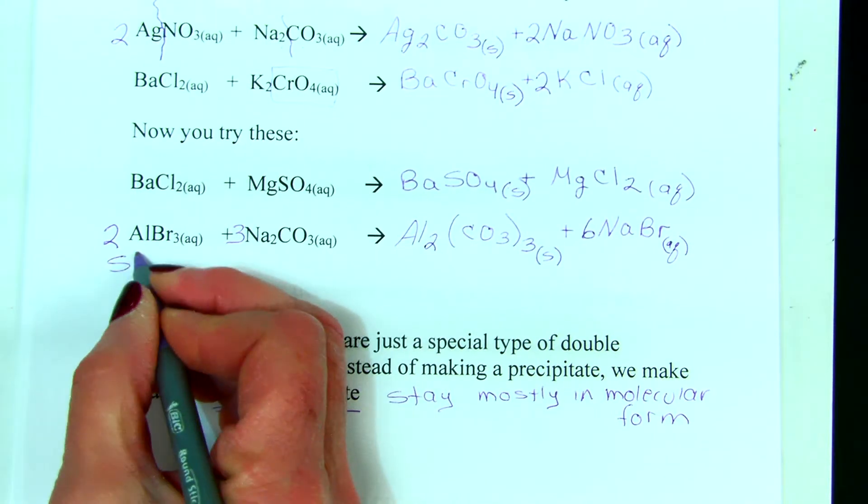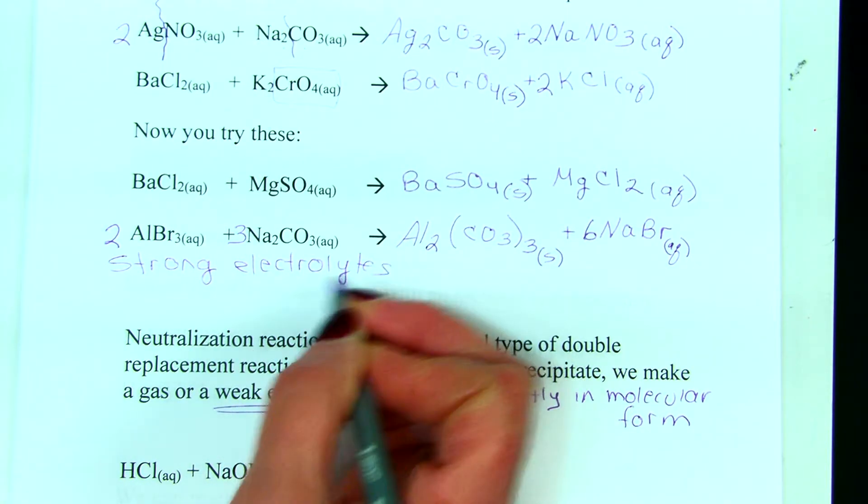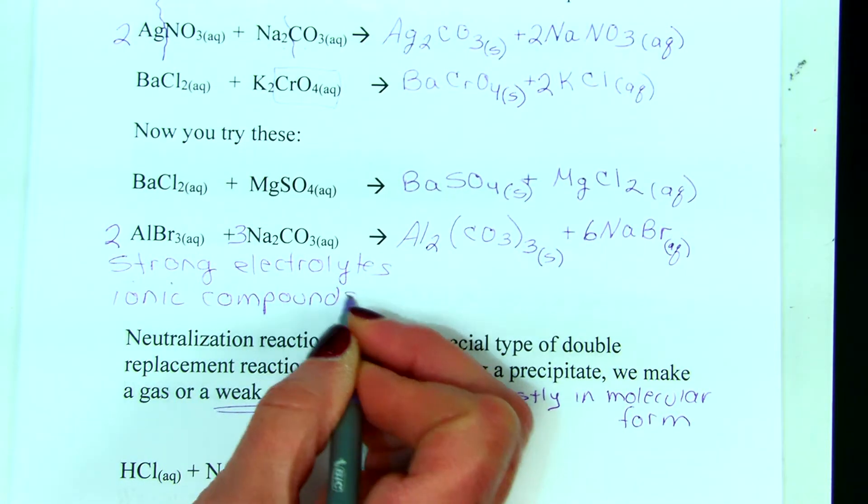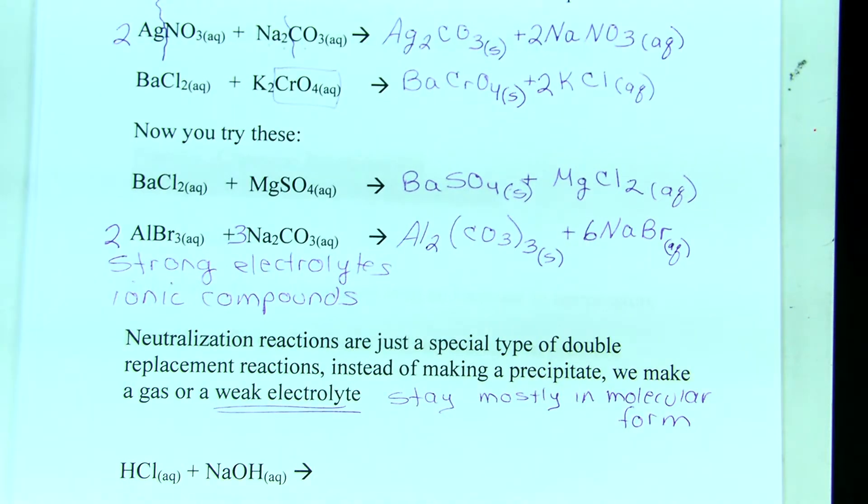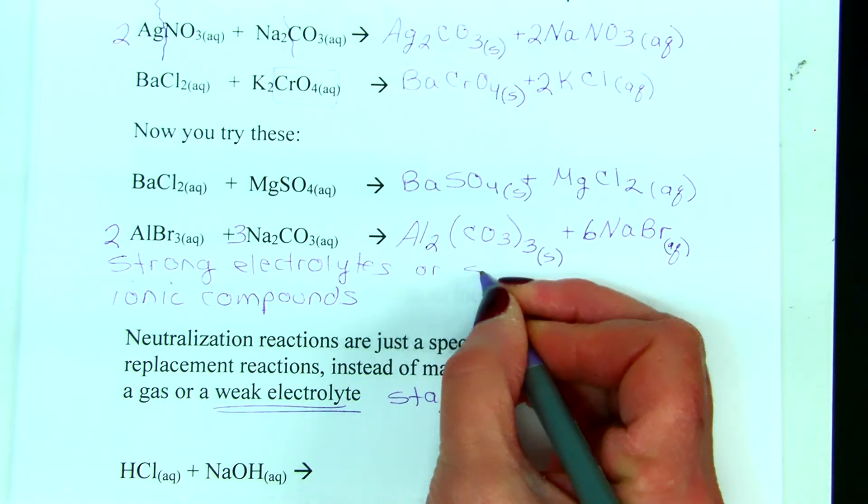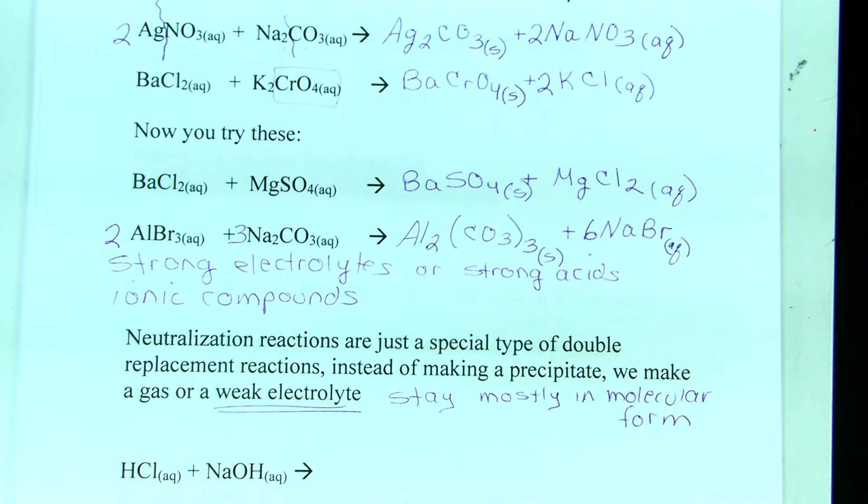So, strong electrolytes are ionic compounds. And we recognize ionic compounds because most of them have a metal and a non-metal. And the ammonium ion is the one exception. Strong electrolytes are ionic compounds or the strong acids are strong electrolytes. Now, we've talked about acids before and we recognize acids because we have hydrogen written first and an AQ subscript. There are seven strong acids. You have to memorize this list. Once you know the seven strong acids, every other acid is weak.